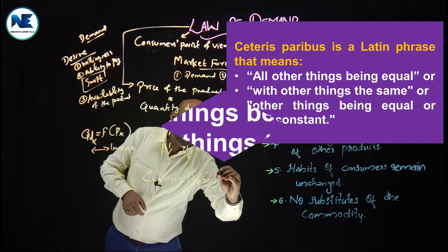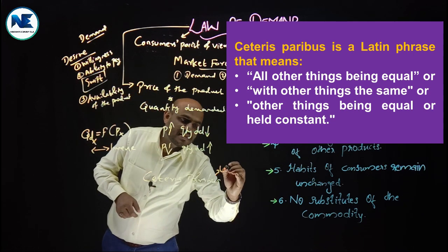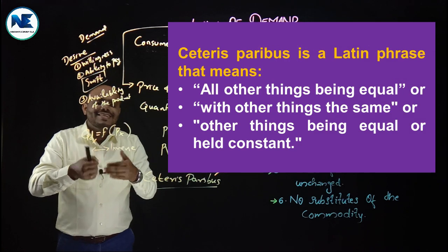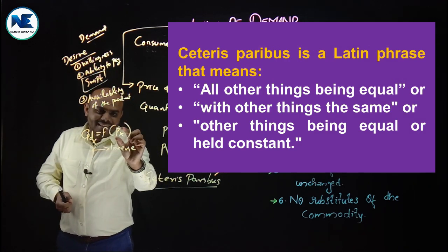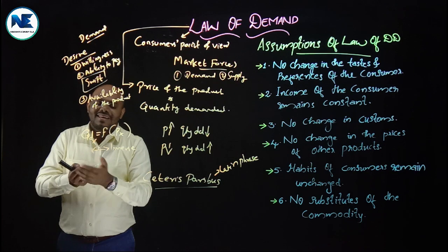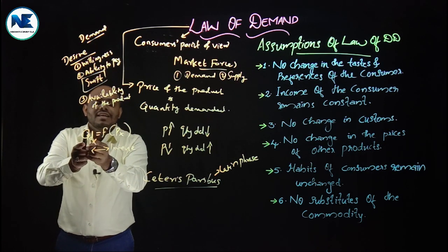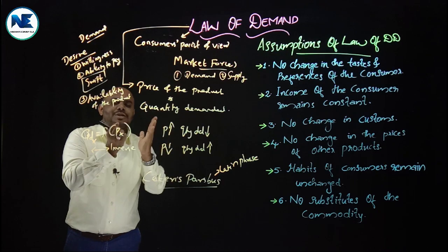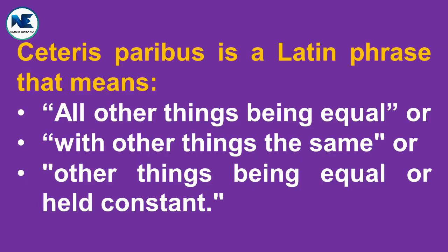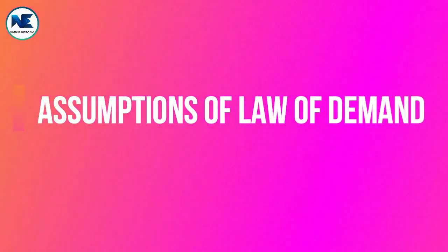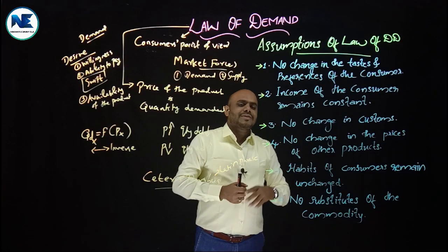Ceteris paribus is actually derived from Latin. When analyzing the law of demand, we consider that there are many factors affecting demand, and we assume there is no change in those other factors. If we assume no change in these other variables, we can isolate the relationship between price and quantity demanded.